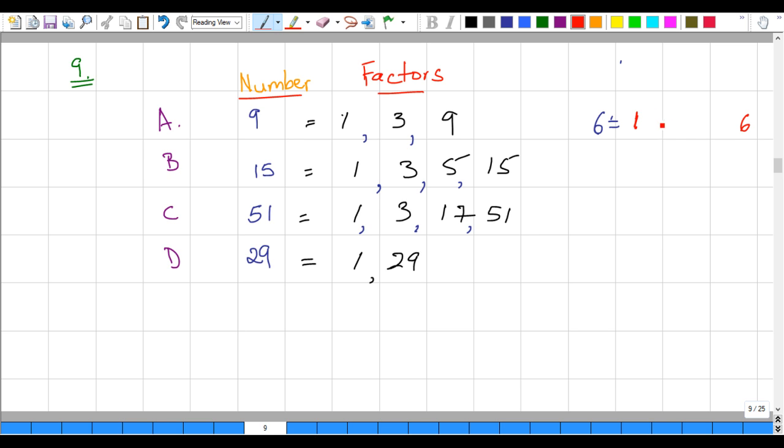So one and itself, let's start there. After one, which other number can go into six without a remainder? Two can go into six three times. Is there any number between two and three that can go into six? No, but we'll list these as the factors of six.